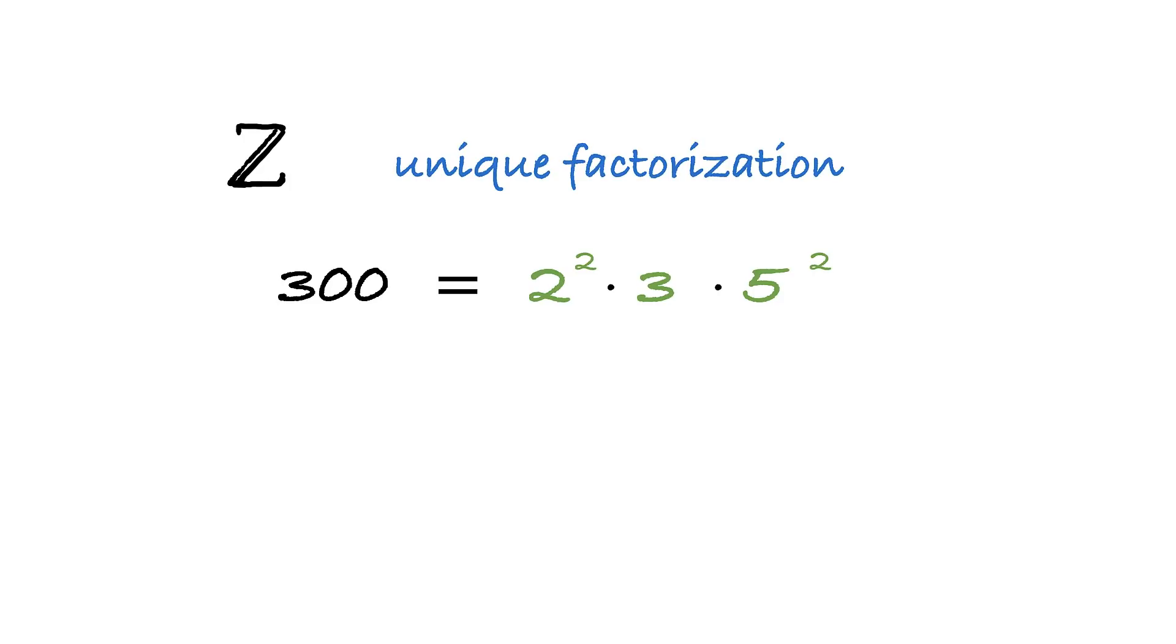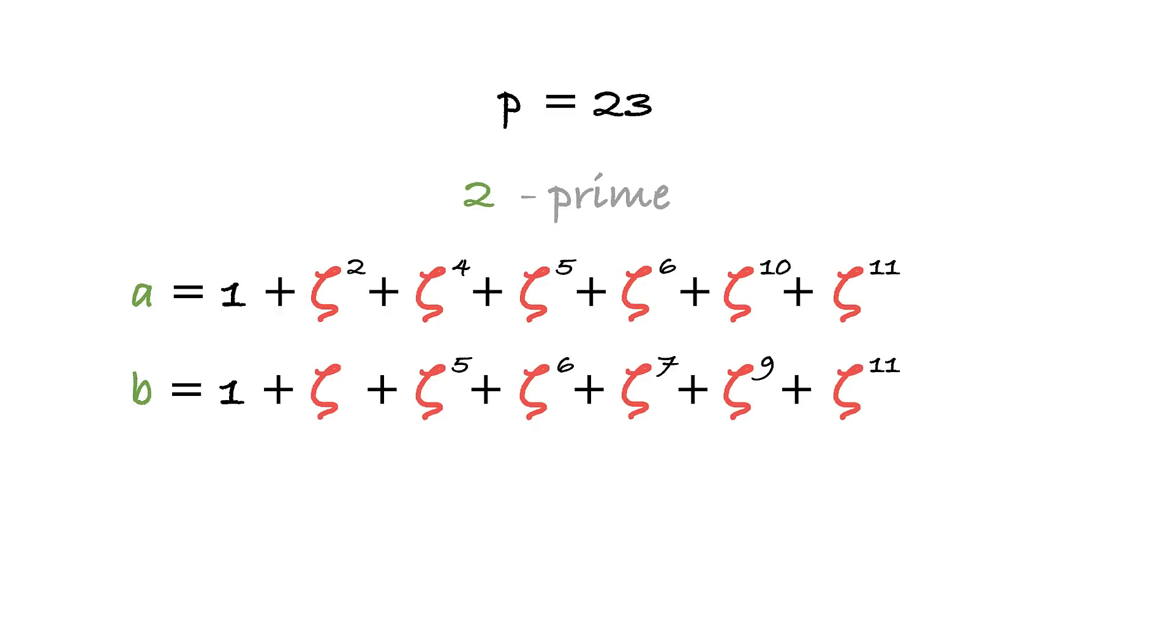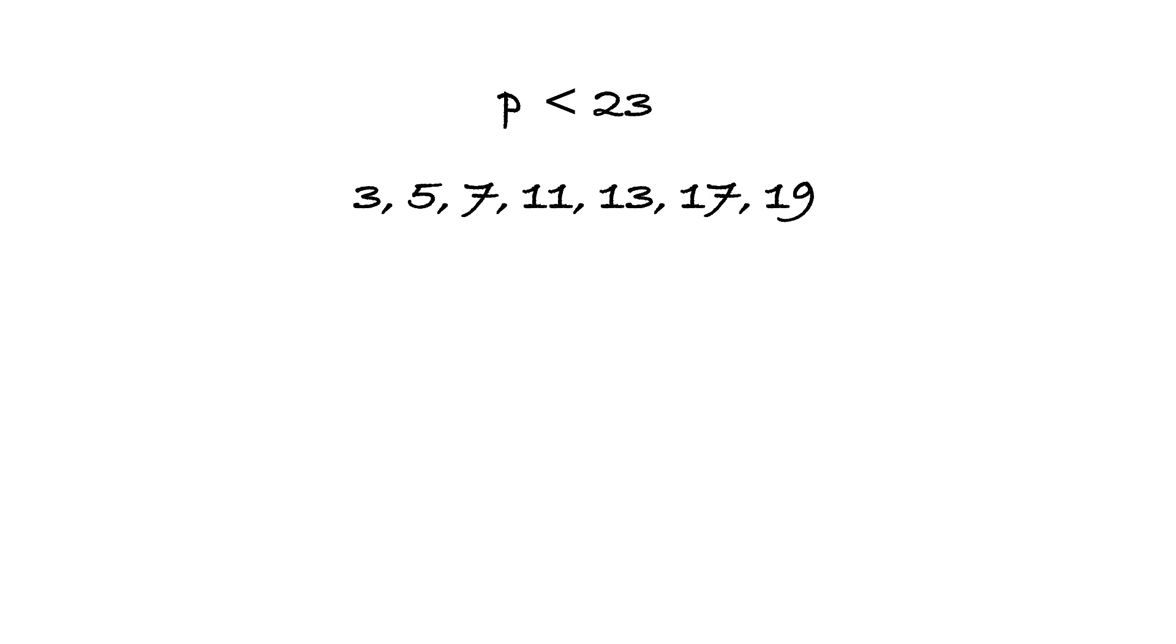But with Z[zeta], the situation is different. For some p, it supports unique factorization; for others, not. Yes, you can always decompose a number into a product of primes, but this decomposition is no longer unique. There can be multiple representations that involve different combinations of primes, still yielding the same number. And the lowest p where Z[zeta] does not allow for unique factorization is 23. In this particular ring, 2 is a prime element. For the following two numbers a and b in Z[zeta], it turns out that 2 does not divide either of them, but it divides their product, which is really peculiar if you think about it. So yes, we can use our method to prove Fermat's Last Theorem for prime numbers below 23, but that's pretty much it.